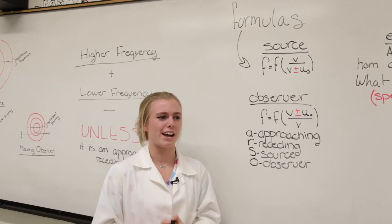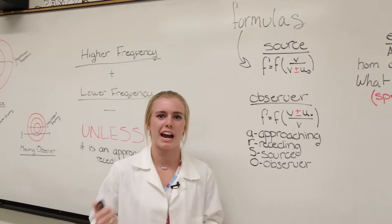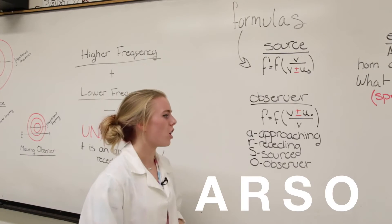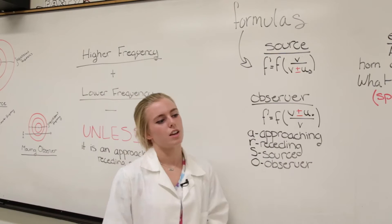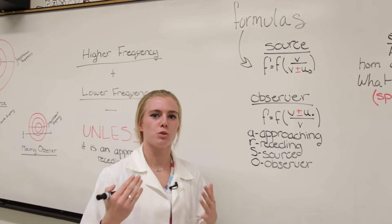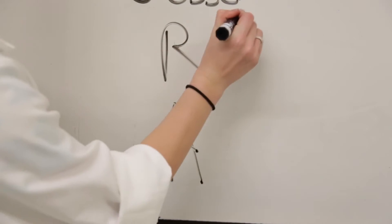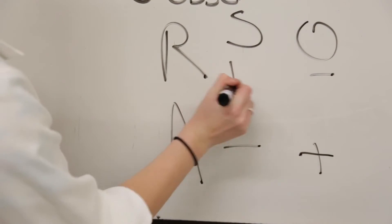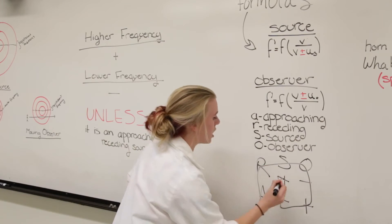I got really frustrated in my room one night. I decided that there had to be a better way to solve these, something more time efficient. Meet your new best friend, ARSO. ARSO stands for approaching, receding, source, observer. A good way to remember ARSO is to write it so that you will always remember it. How I do it is A-R-S-O: negative, positive, negative, positive. This goes in the shape of a shell.